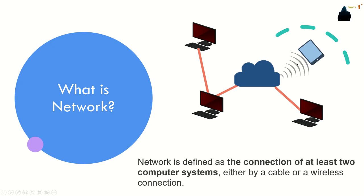In a peer-to-peer network between two computers, each computer has access to the data of the other device and can share resources such as disk space, applications, software, databases, and similar things.